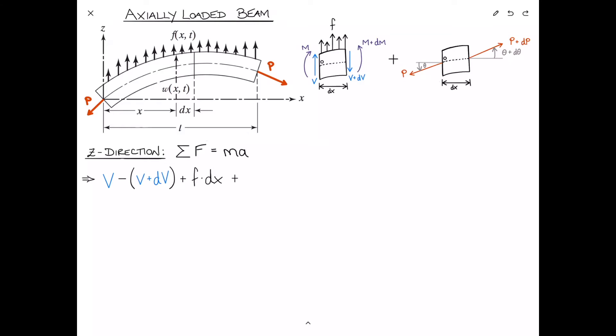Then we want to add the components of P in the vertical direction. We've got P plus dP times sine of theta plus d-theta, and similarly on this side we subtract the component of P that is downwards, minus P sine theta. We set that equal to the mass of this differential slice, which is rho times the volume. The mass is rho A dx, and we multiply that by W double dot. I'm using the convention where a dot denotes the derivative with respect to time.